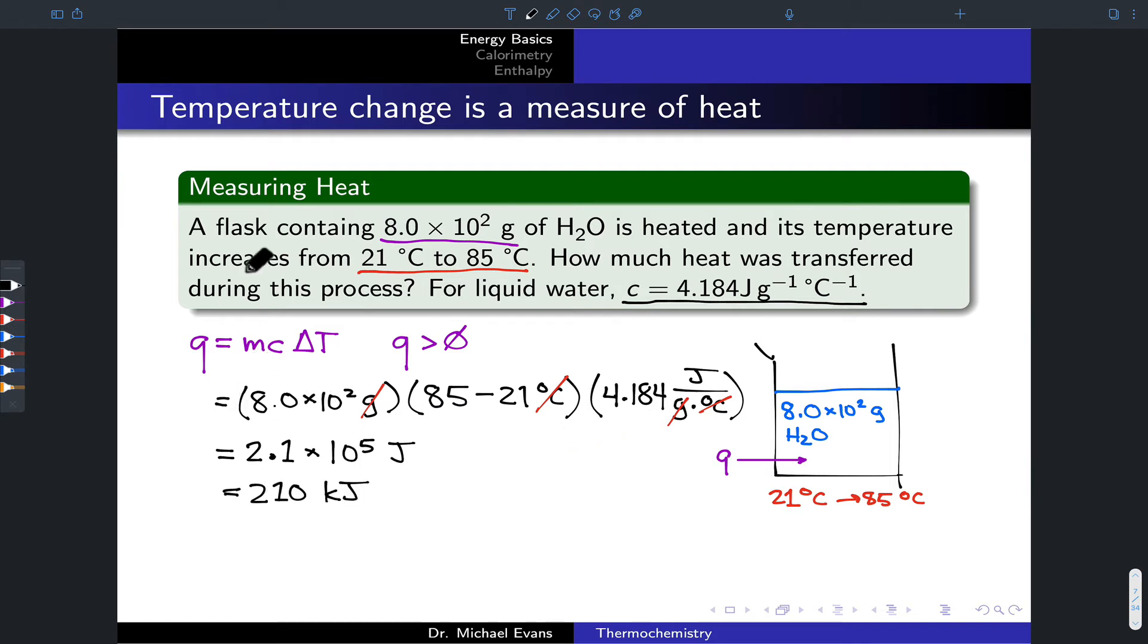And there are a number of different permutations we could imagine for problems like this, right? Maybe we're given the heat and the mass and asked to calculate the delta T. Maybe we're given the heat, given the mass, and given delta T, and asked to calculate the specific heat. These can all be done. Various permutations on what information do I have, and what information am I trying to find?